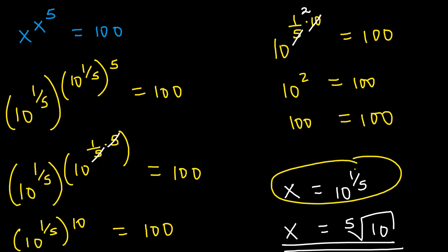Therefore x equals 10 to the power of 1 over 5 is the true value of x. That's how you can solve such an exponential equation. If you found this video helpful, don't forget to like it and subscribe to my channel. Thank you for watching and have a nice day.